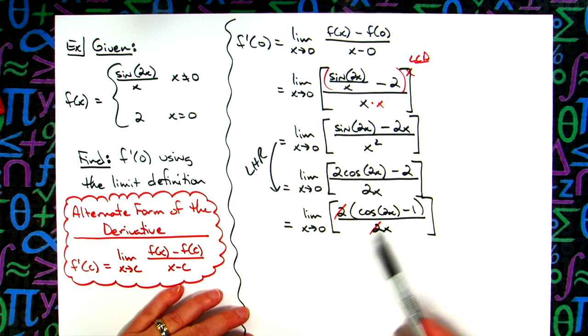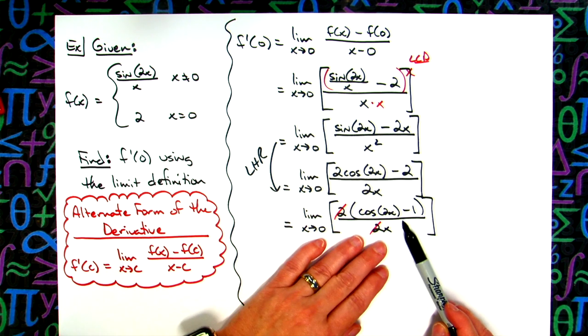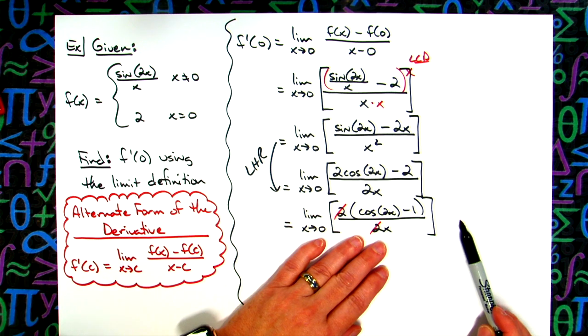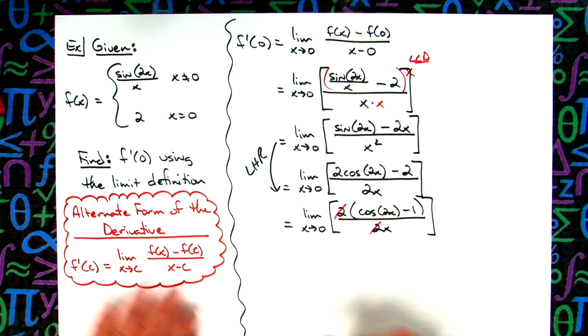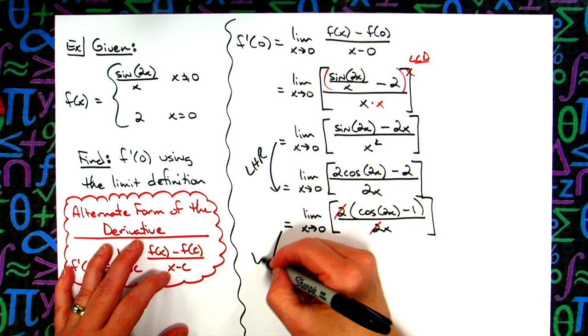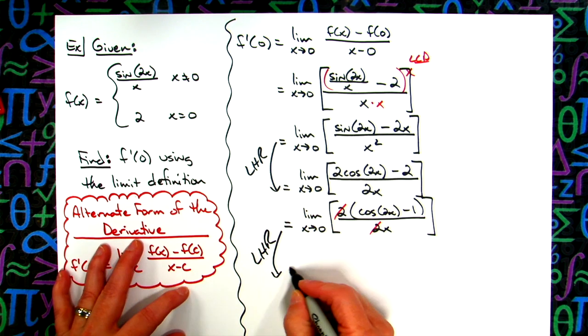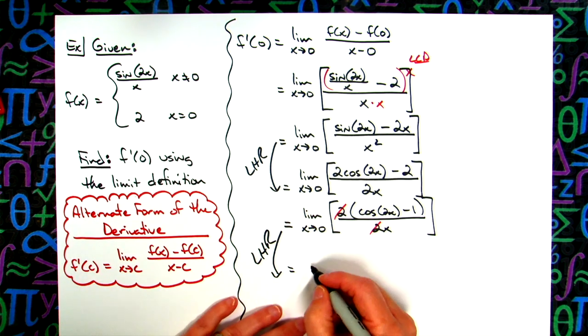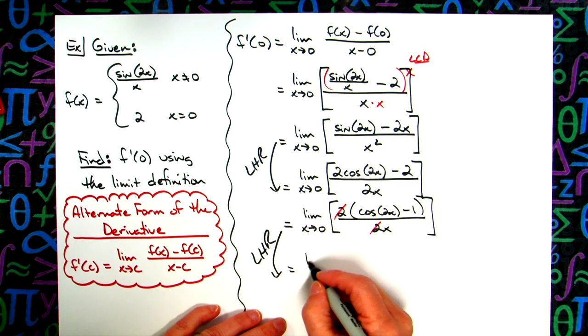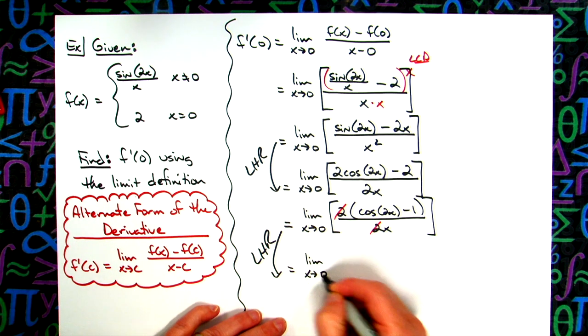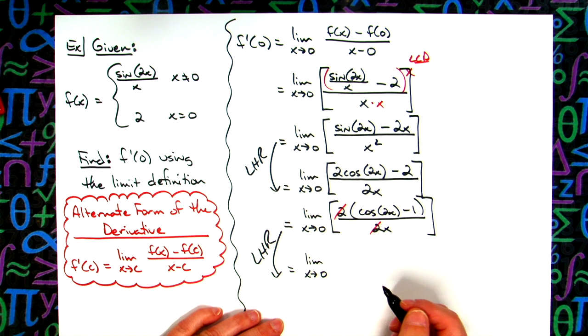Now at this point again if I try to do a direct substitution I'm going to get 0 over 0 again, so then I need to do L'Hopital's rule one more time, at least one more time here. So then I'm going to have the limit as x approaches 0.